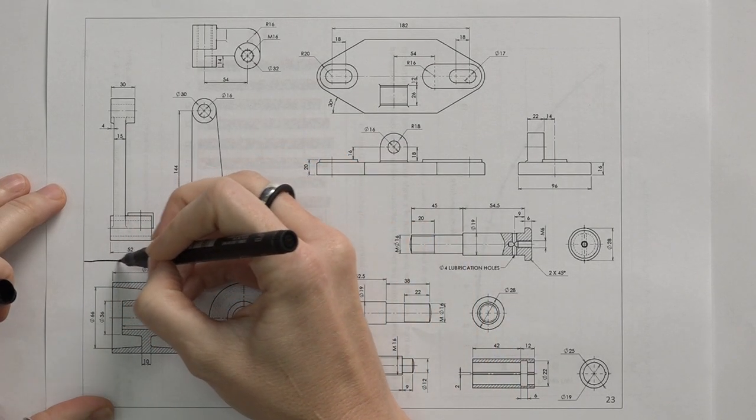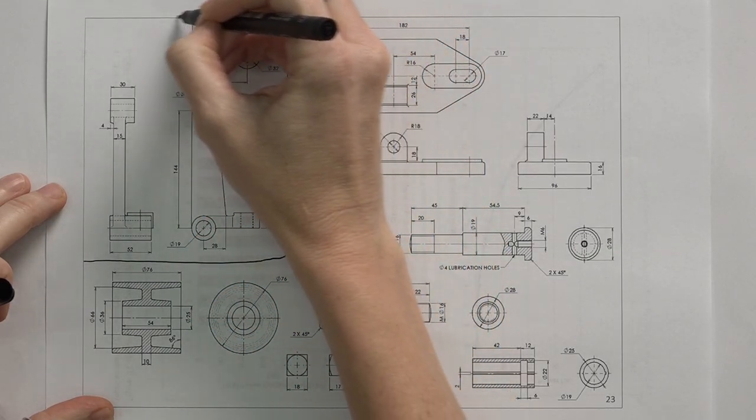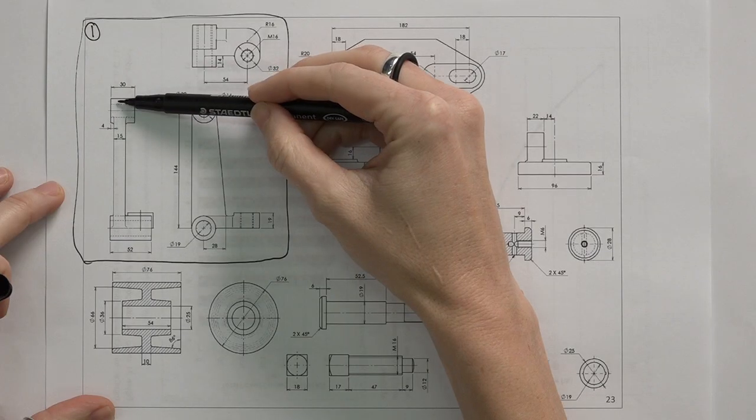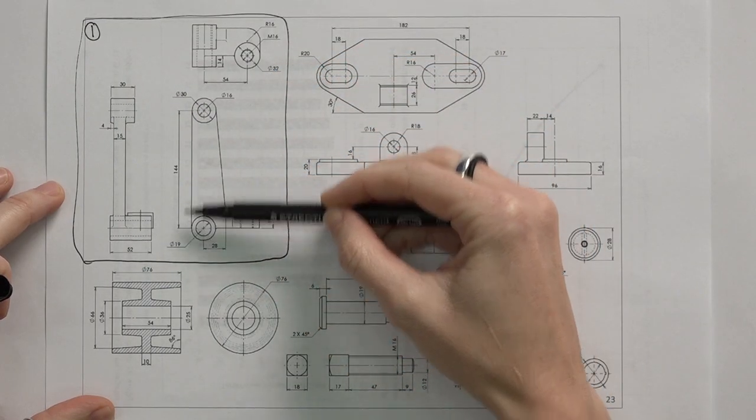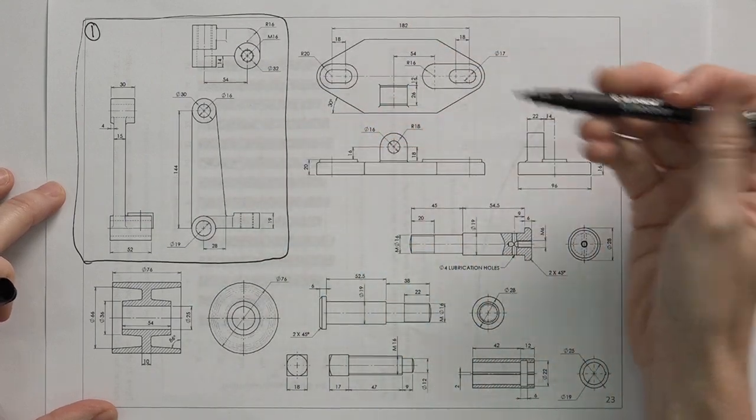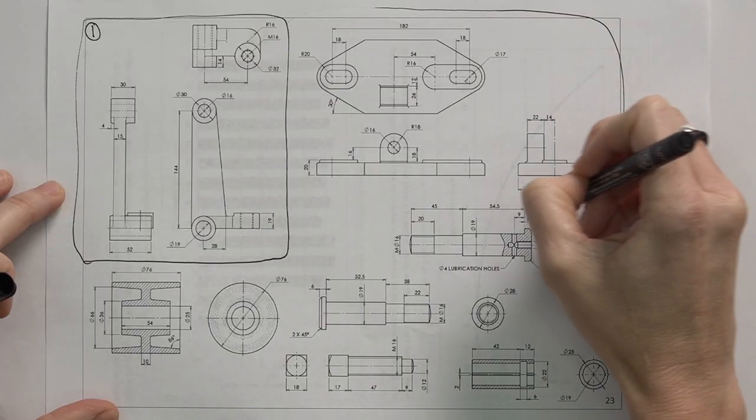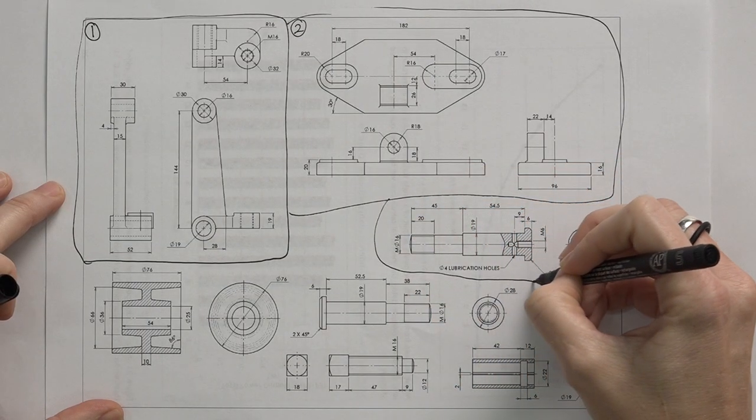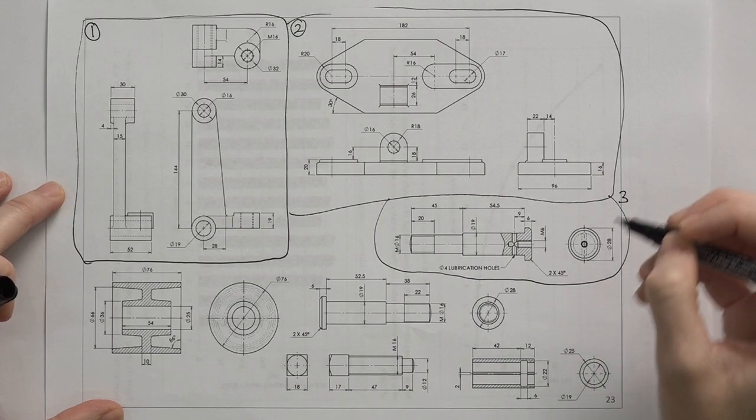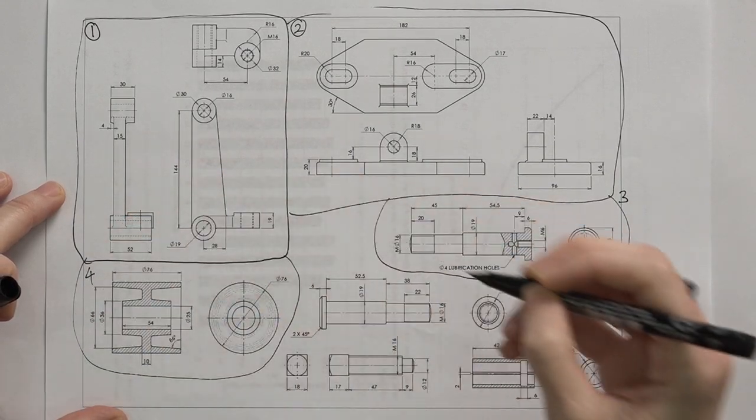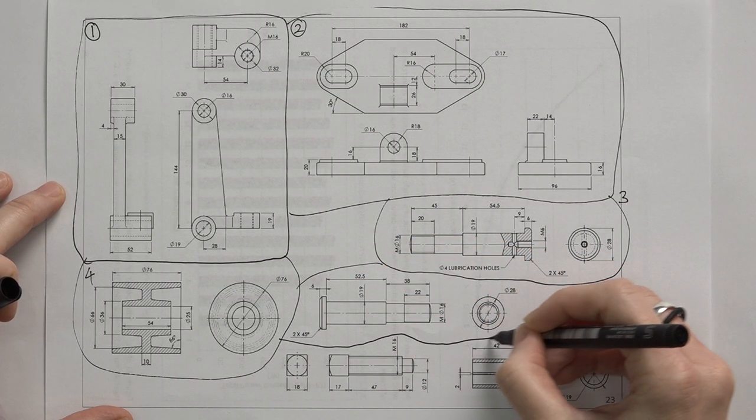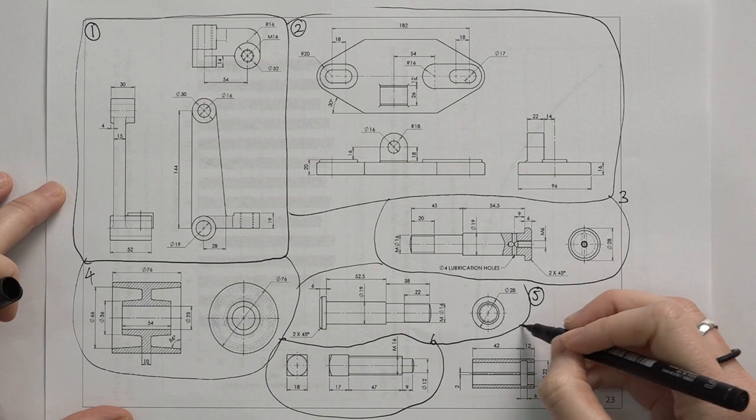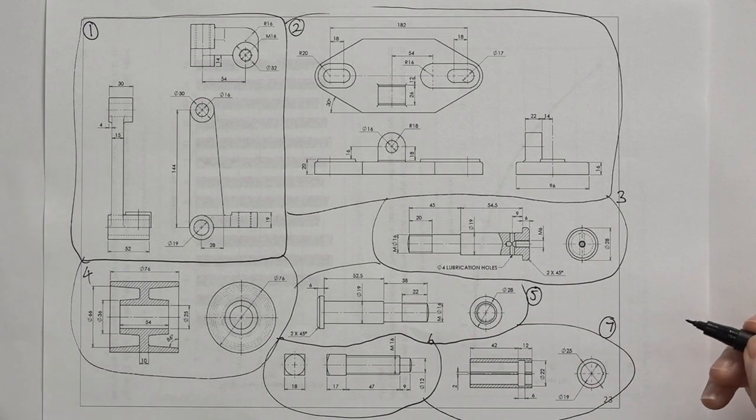If we look at this, we can see that these three components are all three different views of one single component. How do we know this? By making sure that if we line these up orthographically, they will line up. So these three are connected. In the same way, these three are connected, and that is part two. These two are connected. These two are connected. You continue in this way until you've identified all the parts that we have.